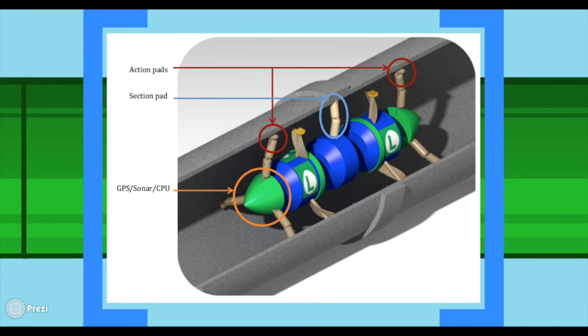The robot adheres to pipe walls by means of six engine pads. Joints connect the five parts of the robot. GPS coordinates allow the robot to locate its position.